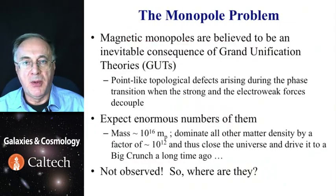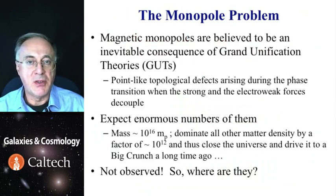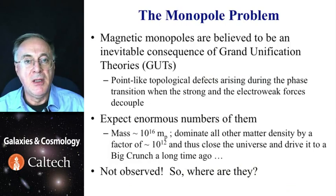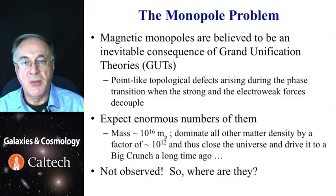The monopole problem is somewhat generic to particle physics, and the prediction is that copious numbers of those will be generated during the grand unified theory phase transitions. Yet, none have been found despite many intensive searches. Not only that, but their masses are supposed to be so high that coupled with their density, they would totally dominate dynamics of the universe.